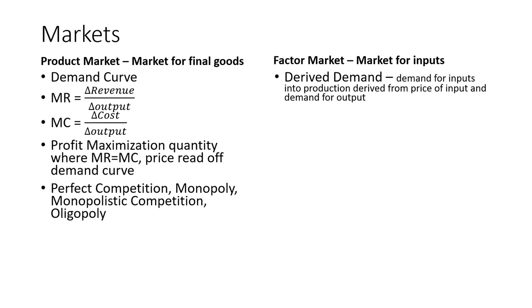For example, if you want to purchase labor and you're trying to decide how many workers to hire, that demand is going to be determined not only by the price you have to pay workers, but also the demand for your output. If you want to purchase labor and the price of labor were $15 an hour, you may not want to hire a lot of workers, even if the demand for your water bottles is high. $15 an hour may, at least in your opinion, be too high.